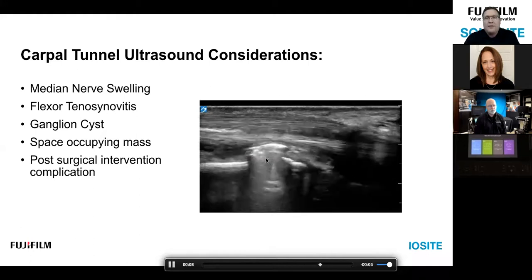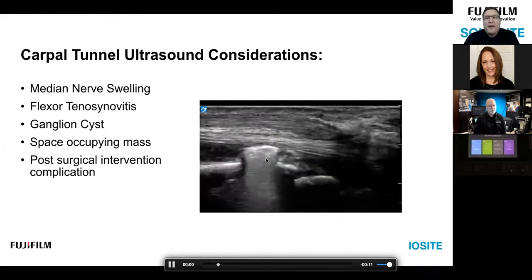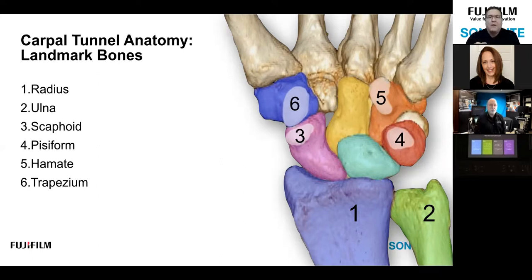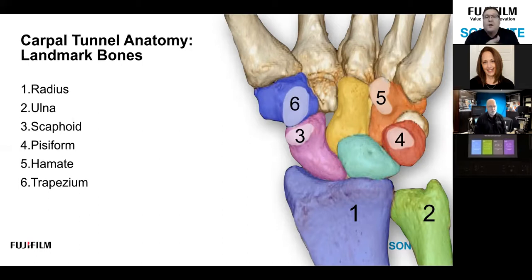Any time you're scanning musculoskeletal ultrasound, always start by scanning bones. Ignore all of the soft tissues until you see really nice bony landmarks, then work your way from deep to superficial. The soft tissue landmarks will constantly change in MSK ultrasound, but the bony references usually will not. Once you have a good foundation of bony references, that's when you start worrying about the soft tissues.